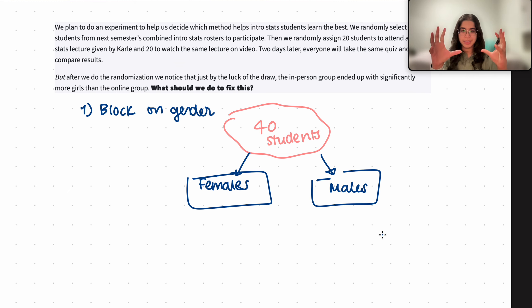And then what we want to do after we have divided that random sample of 40 students into our two blocks, basically into the males and females, we want to randomly assign 50 percent of each group here to the control and experimental groups. So what I want to do is randomly assign half of my females to the control group. Let's say this is control and then this one is experimental.